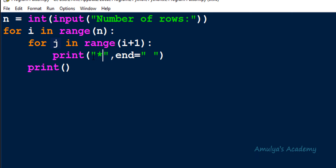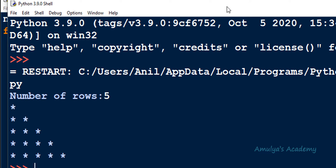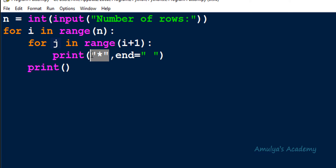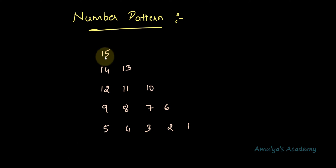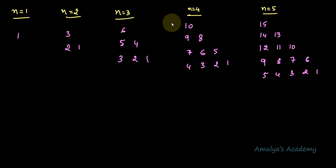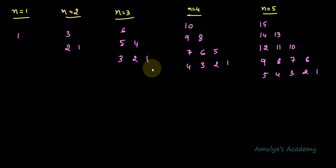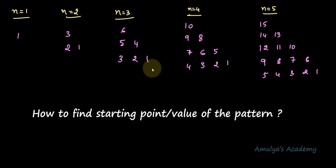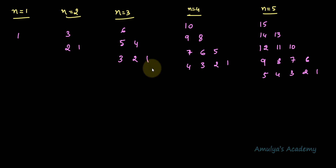For example, if I print a star in the print function, it prints stars in a right triangle shape. Instead of star, if I print i or j, we get numbers in the right triangle shape but different values. Today we want to print a specific pattern that begins from 15 when n is 5, from 10 when n is 4, and from 6 when n is 3. Finding the starting value is the main challenge, and since we are writing a general program it needs to work for any number of rows.